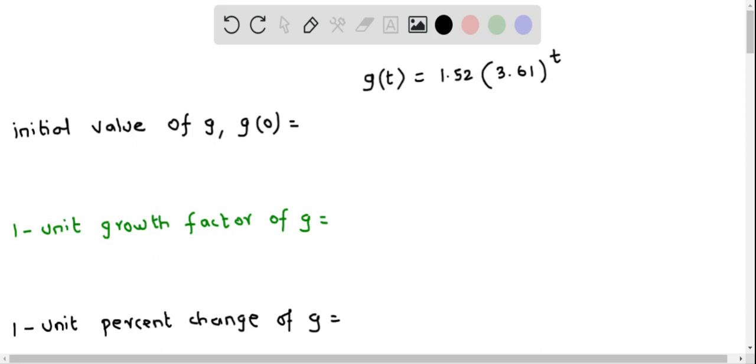So we plug t equal to 0 into this exponential function to determine g of 0. Therefore this becomes 1.52 times 3.61 raised to the power of 0, and so this equals 1.52. Any number raised to the power of 0 equals 1, so it becomes 1.52 times 1, which equals 1.52.